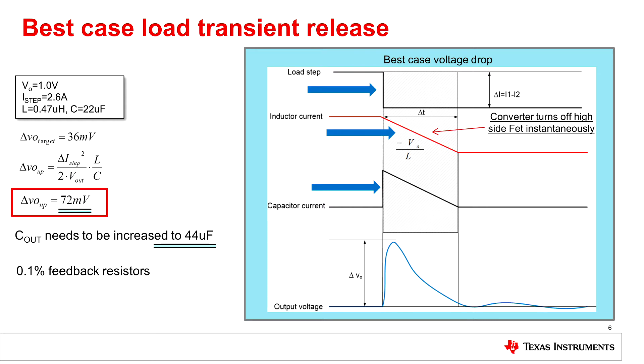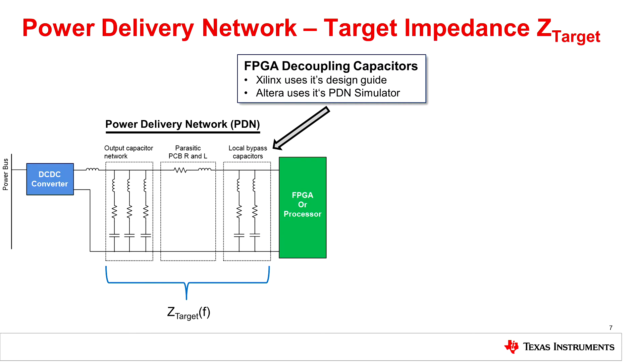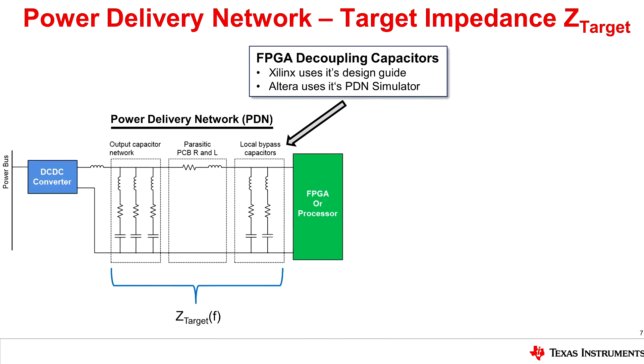Let's verify whether we need a large output capacitor because we actually have a power delivery network where we need to meet a certain output impedance. The power delivery network you can see here.